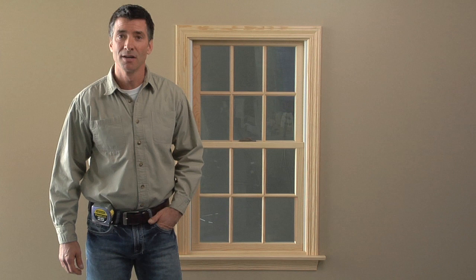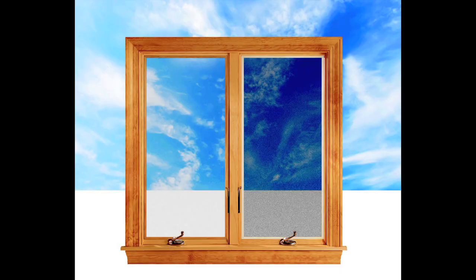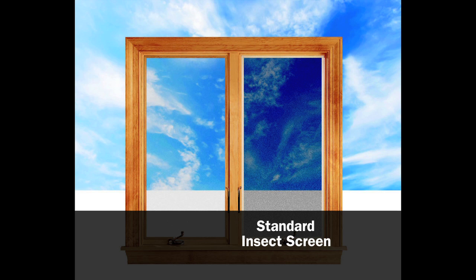Today I'm going to show you how to buy the proper insect screen for your Anderson windows. There are two types of Anderson insect screens: the first is a standard aluminum insect screen, and the other is a TruScene insect screen exclusive to Anderson that is virtually invisible and provides over 50 percent more clarity than standard Anderson insect screens. Now let's get started.